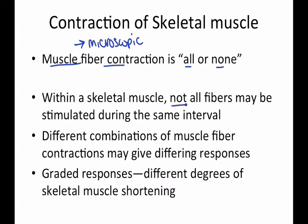Within a skeletal muscle, not all fibers may be stimulated during the same interval. So if you have some sort of contraction, maybe only the first three fibers are going to be stimulated at one interval. Within each fiber, if we had five different fibers, the muscle contraction for each fiber is either going to be 100% or zero, but the fibers can be stimulated at different intervals.